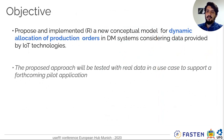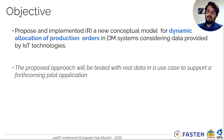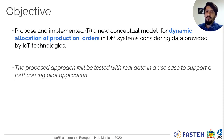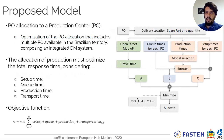The idea of this research is to propose and implement a new conceptual model for dynamic allocation of production orders in distributed manufacturing systems, considering data provided by Internet of Things technologies. The proposed approach will be tested in a use case using real data, with the goal of supporting a first-come pilot application.